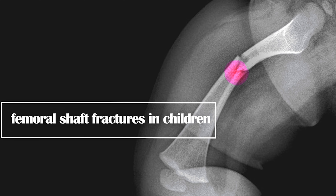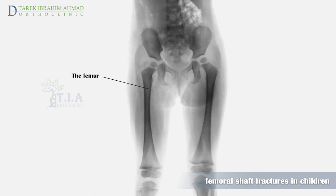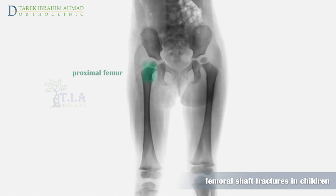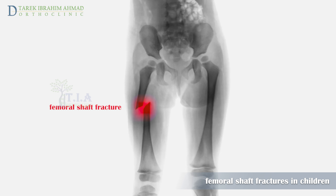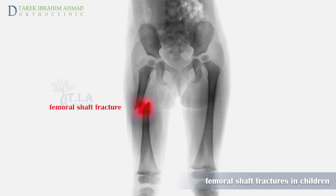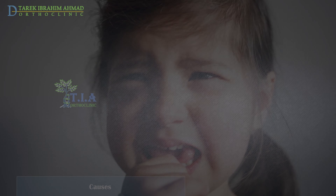Femur shaft fractures in children. The femur is the largest bone in the body. The pediatric femur can be divided anatomically into the proximal femur, made up of the femoral head, femoral neck, greater and lesser trochanter, the femoral shaft, and the distal femur, made up of the medial and lateral condyles. The shaft is the most common site for pediatric femur fractures, accounting for almost 75 percent of all femur fractures and 2 percent of all pediatric fractures.